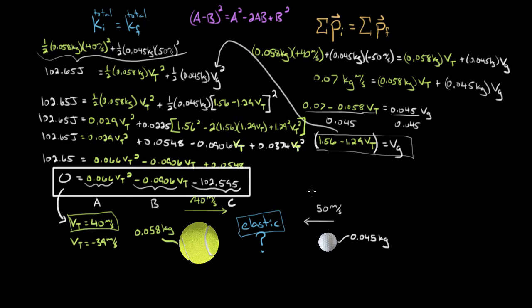To derive this simpler way, we're going to do what we always do in physics to derive a nice result: instead of solving numerically with numbers, we're going to solve it symbolically with symbols. Instead of calling the mass of the golf ball 0.045 kilograms, let's call it mg for mass of the golf ball. You might think this will still be a mess with variables, but solving problems symbolically oftentimes allows you to see patterns, symmetries, and cancellations that aren't obvious when there's a bunch of numbers around. Something magical is going to happen, giving us a much simpler result.